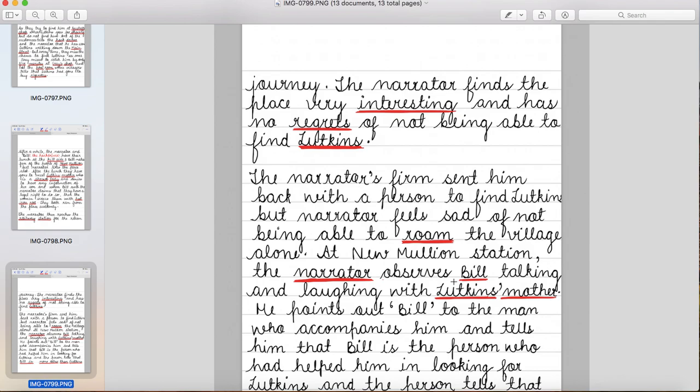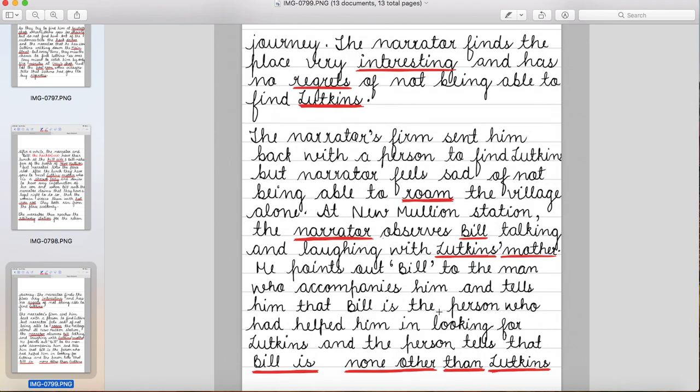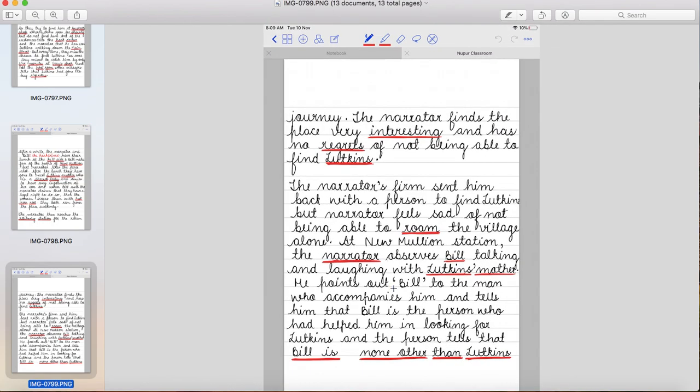At New Mullion station, the narrator observes Bill talking and laughing with Lutkins' mother. Jaise hi waha New Mullion station mein pahunchte hai, narrator kya observe karta hai? Ki Bill Lutkins ki mother ke saath has raha hai. He points out Bill to the man who accompanies him and tells him that Bill is the person who had helped him in looking for Lutkins. Woh Bill ki taraf point out karke apne saath joh uska friend aata hai, usko bataata hai ki ye vahhi person hai jisne Lutkins ko find karne me meri help kari thi. And the person tells that the Bill is none other than Lutkins.